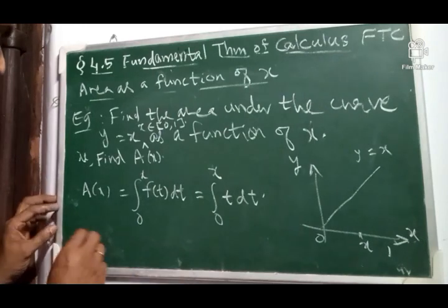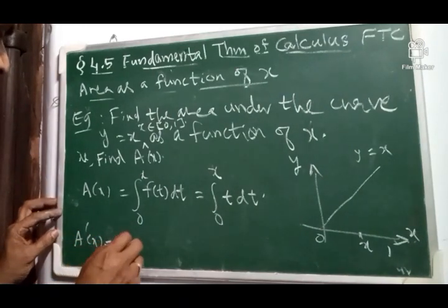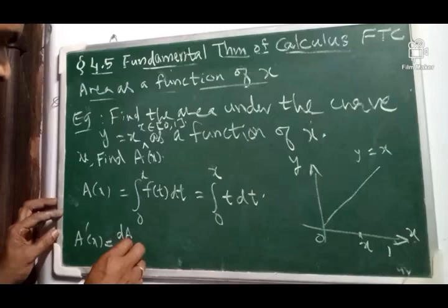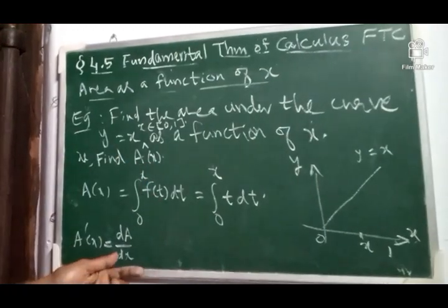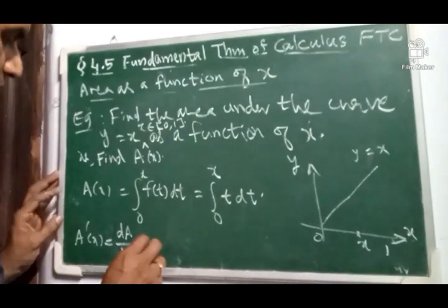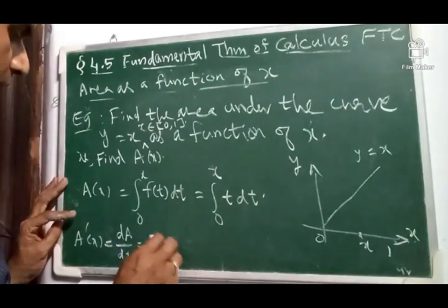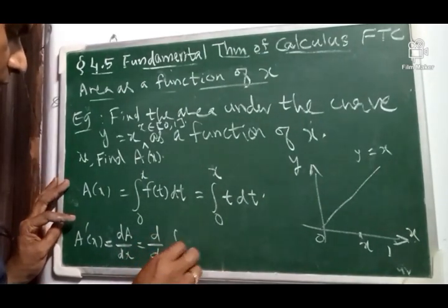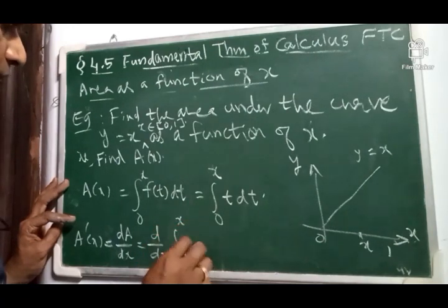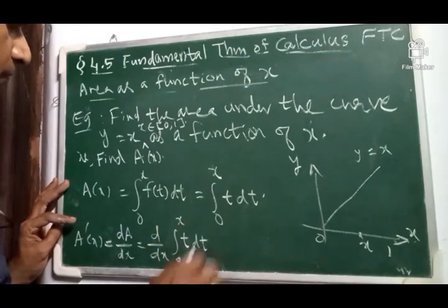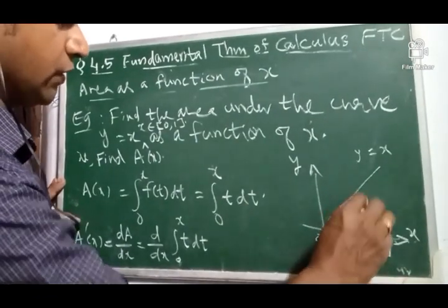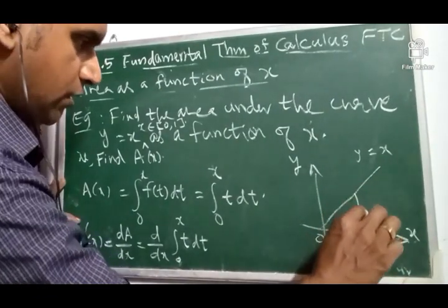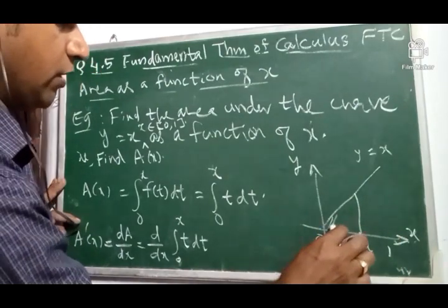What is the derivative? So A'(x), A dash x means dA/dx. Remember here, area is a function of x. So let us find out dA/dx. dA/dx is d/dx of integral 0 to x t dt. That is, this area is integral 0 to x dx.